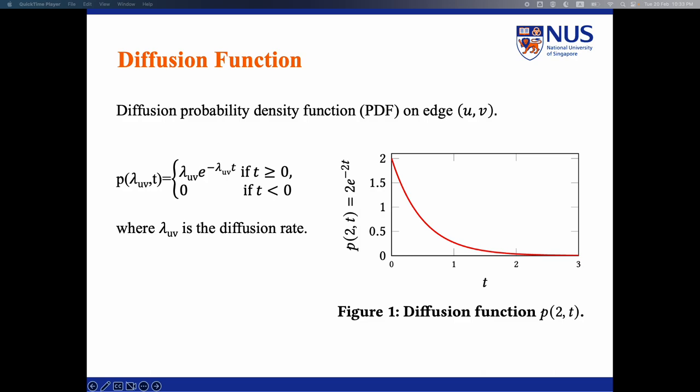To capture the diffusion process of each edge, we suppose the diffusion probability density function on edge uv as an exponential function with parameter lambda uv. Here lambda uv is the diffusion rate. Figure 1 here gives an illustration of function p(t) by replacing lambda uv to 2.